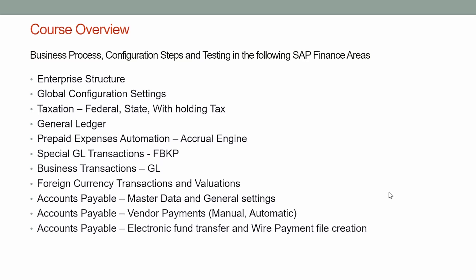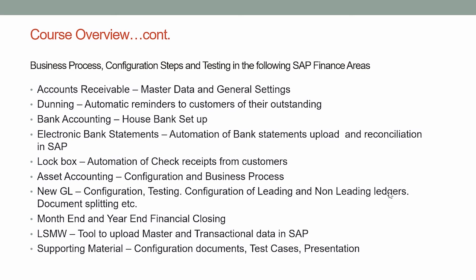We will then move into the accounts payable area, covering master data settings and general settings. Accounts payable has specific functionalities like the automatic payment program. We will also look at file creation using DMEE2 in the automatic payment program and electronic fund transfer like ACH wire transfer to external vendors using the automatic payment program.